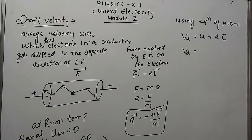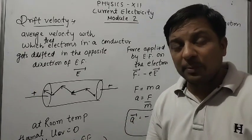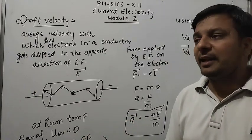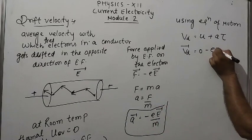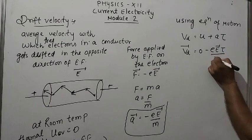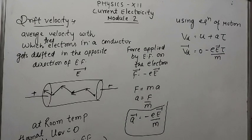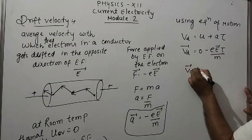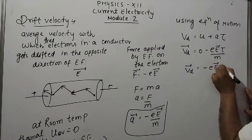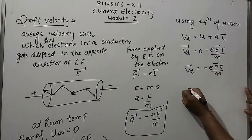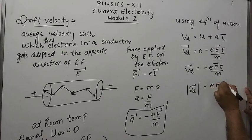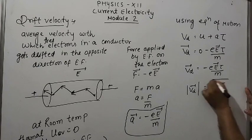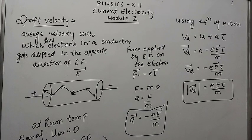Writing in vector form: V_D equals U plus A-tau. The initial thermal velocity U before applying the external electric field is zero. Substituting the acceleration, V_D equals minus eE-tau by M. Taking the magnitude, the drift velocity equals eE-tau divided by M. This is the formula for drift velocity.